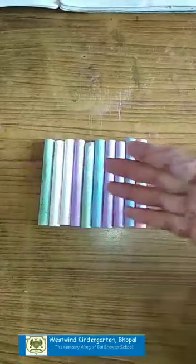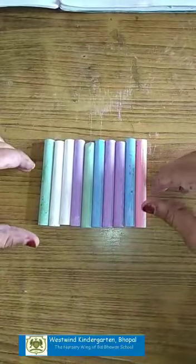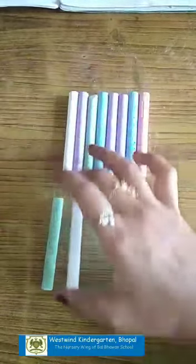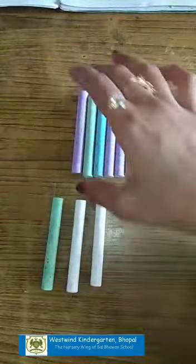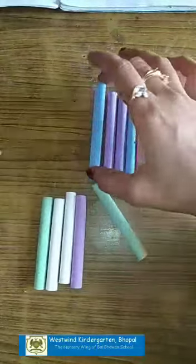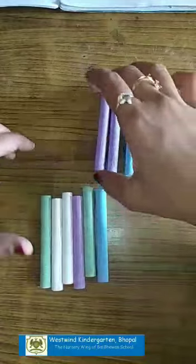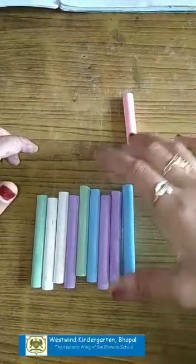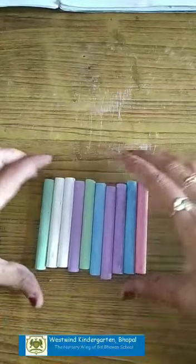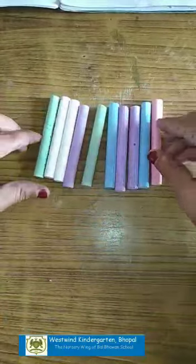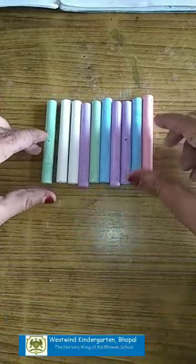Children, can you see what I have? Yes, I have chalks over here. Let's count them. 1, 2, 3, 4, 5, 6, 7, 8, 9 and 10. I have 10 chalks.